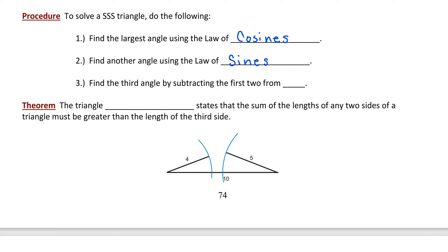Find the third angle by subtracting the first two from 180 degrees. Remember that the Pythagorean theorem and SOHCAHTOA only apply to right triangles. For oblique triangles — triangles other than right triangles — we'll use the law of cosines, the law of sines, and the fact that the sum of the three angles is always 180 degrees.